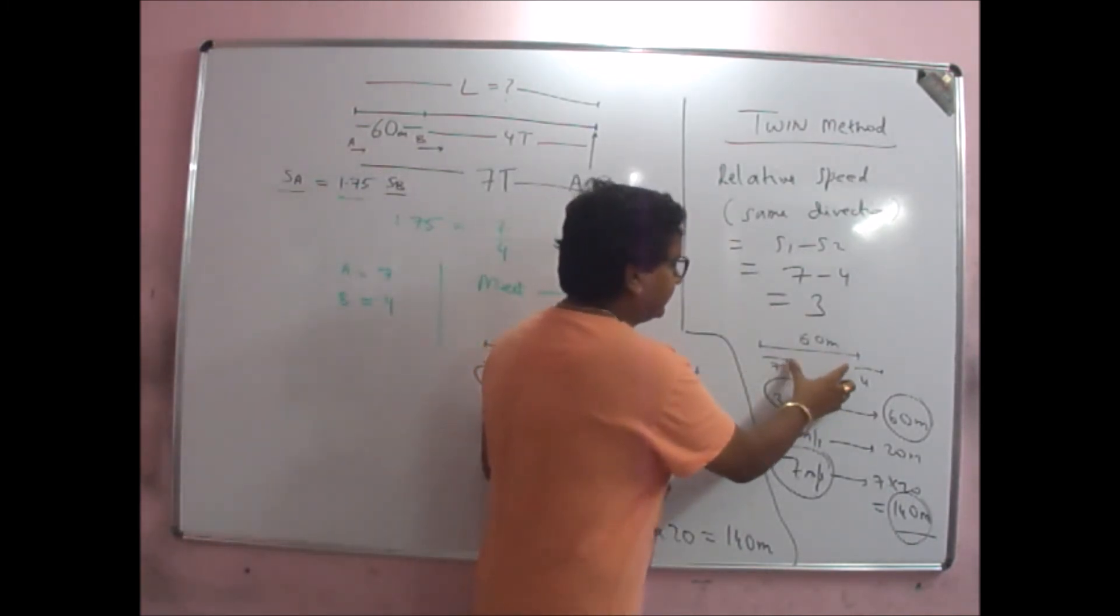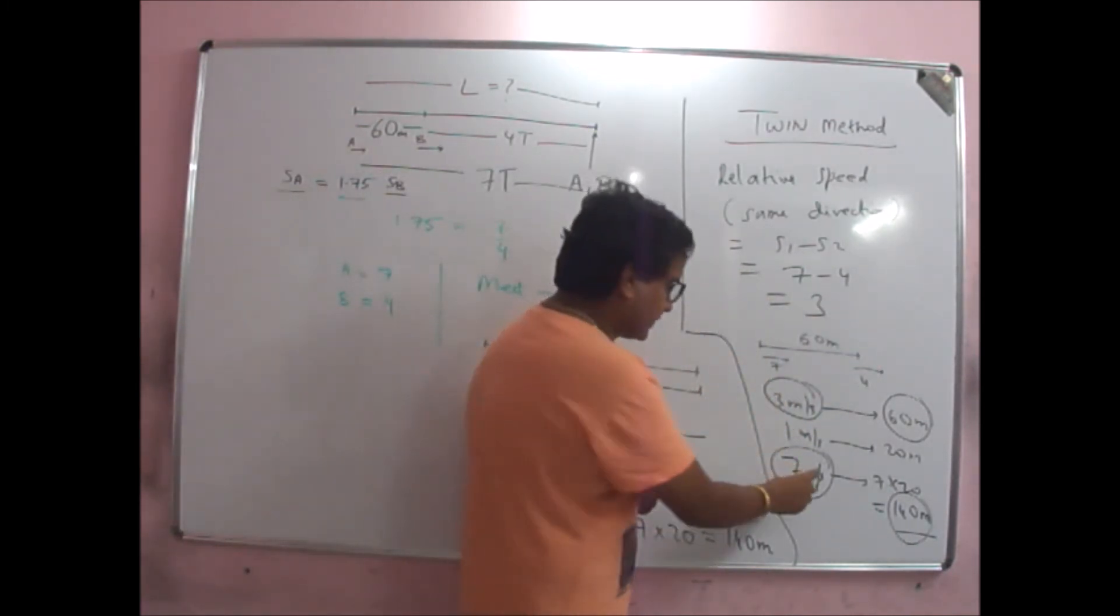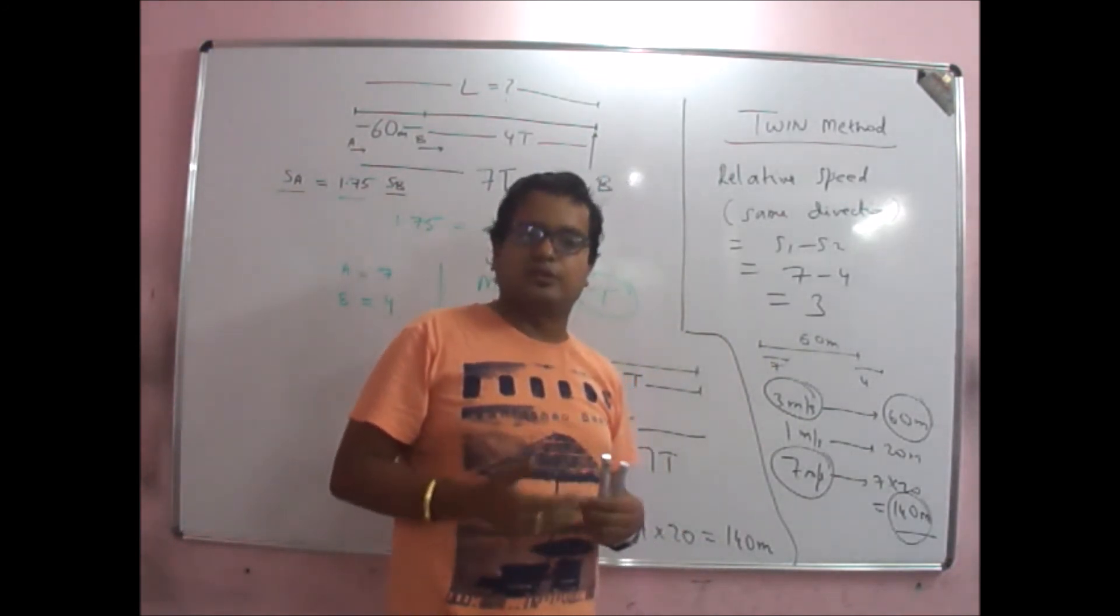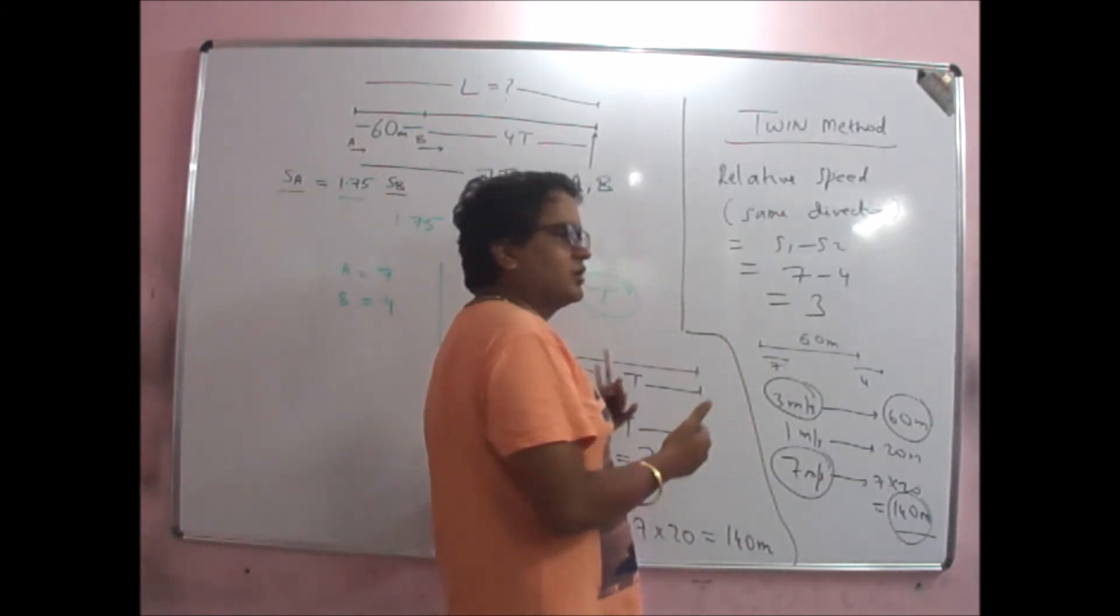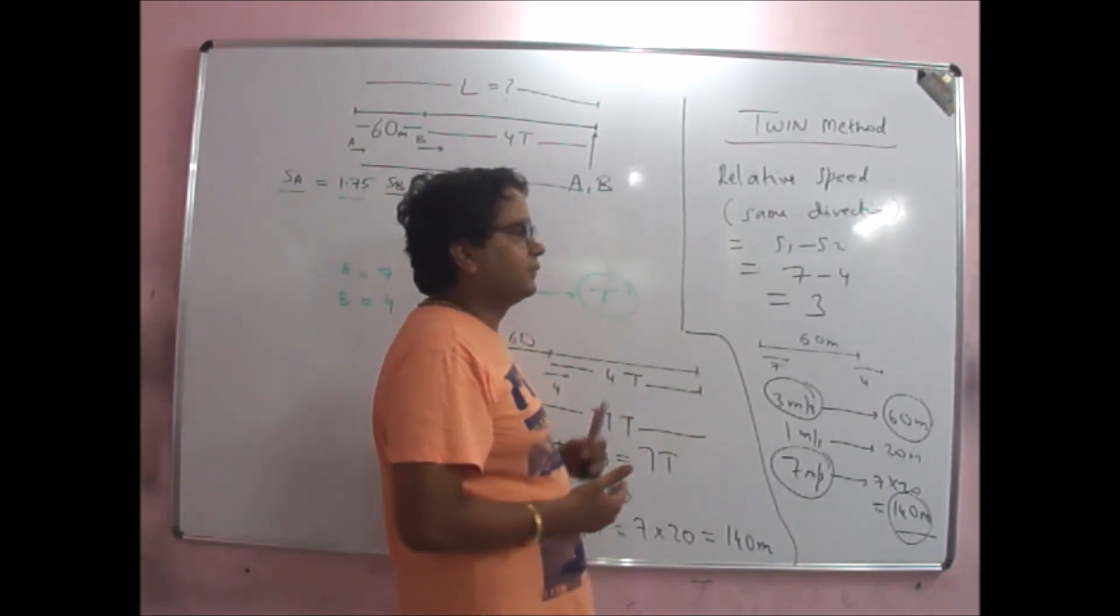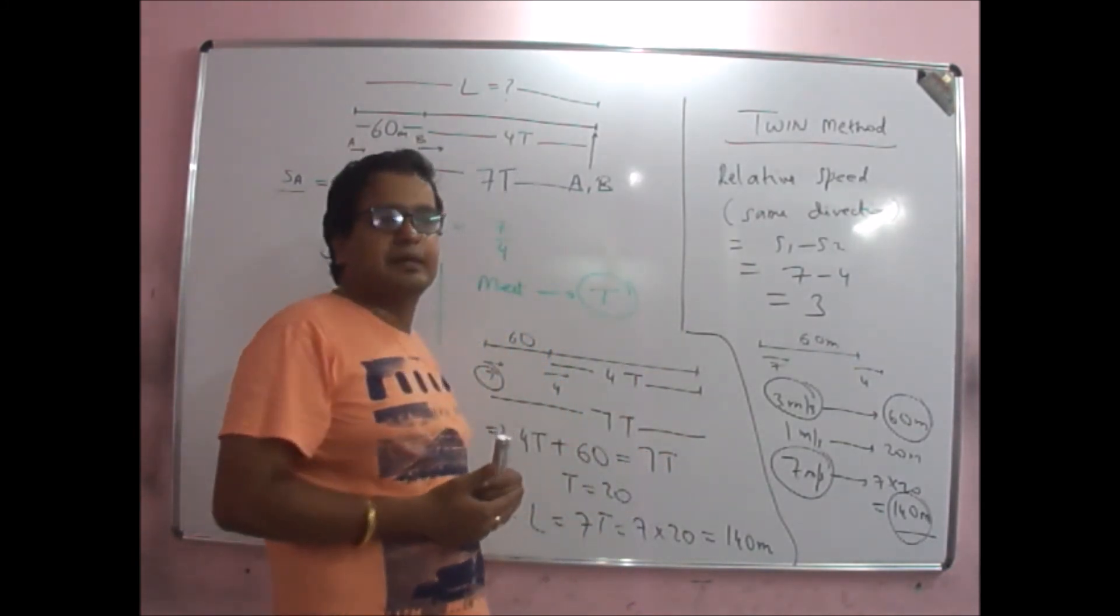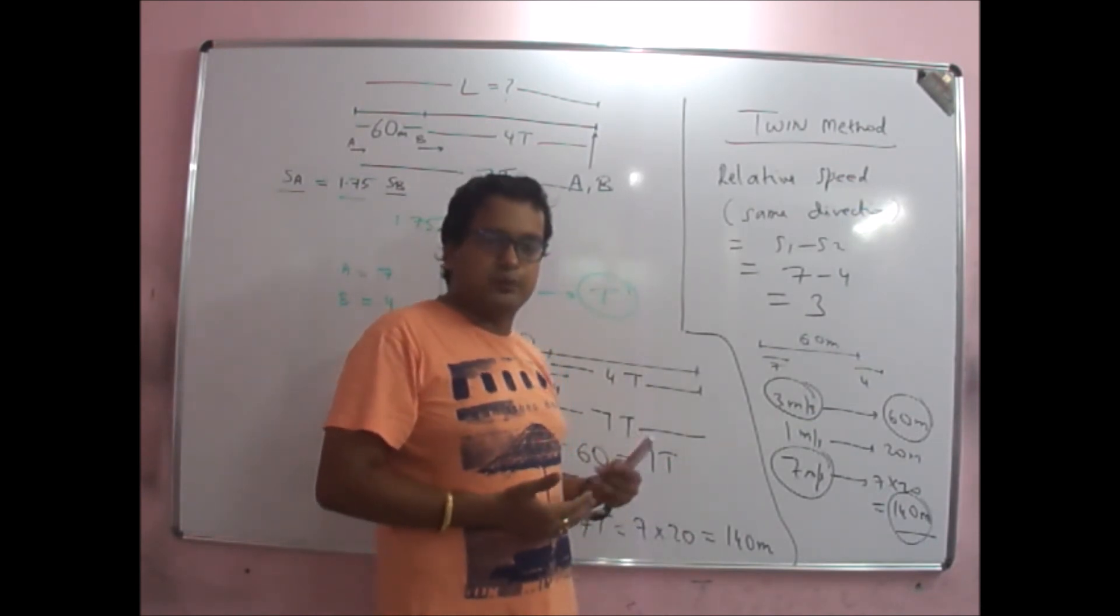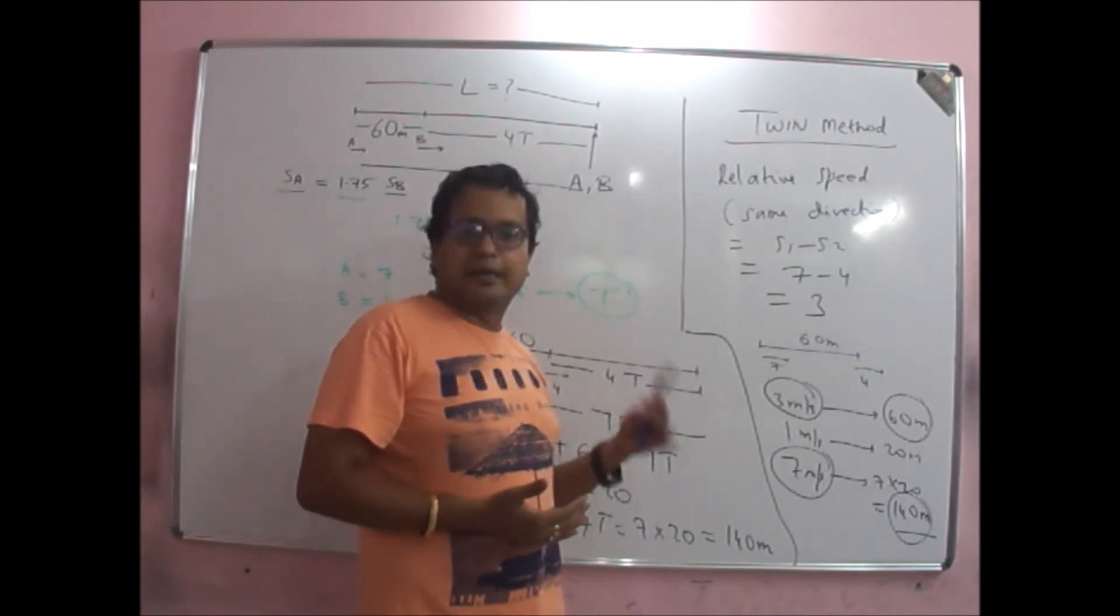In the second one, I directly related 3 to 60, to 7 to 140. So you can use both the approaches. Such concept of relative speed is applied in questions on trains and platforms as well as in clocks. Both the methods are applicable.